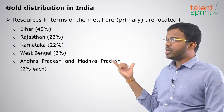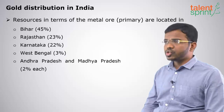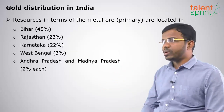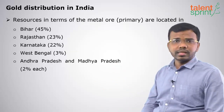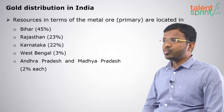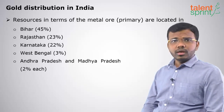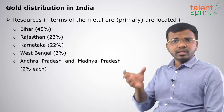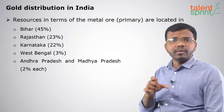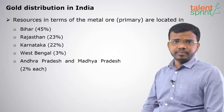The states with gold as a primary ore are: Bihar has 45 percentage, next is Rajasthan, next Karnataka, next West Bengal, and next are Andhra Pradesh and Madhya Pradesh — they have two percentage each of metal ore where gold is the primary element.